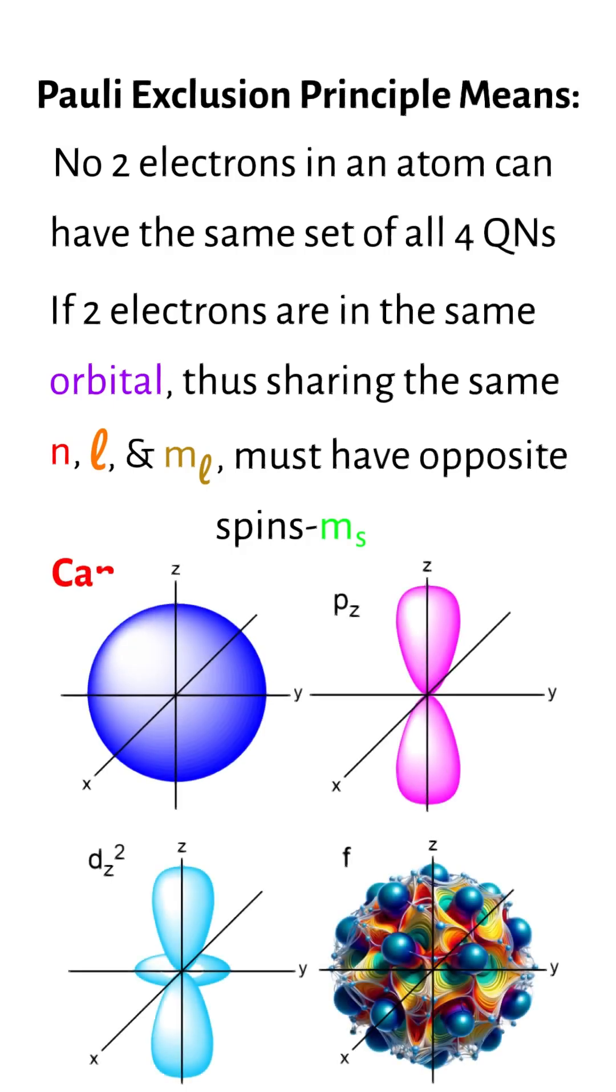Simplified, this means that an atomic orbital can hold a maximum of two electrons, and they must have opposite spins.